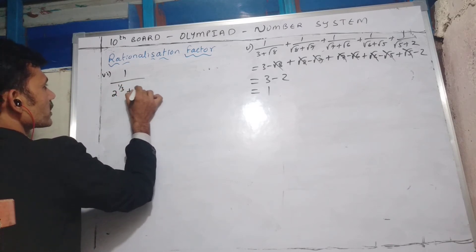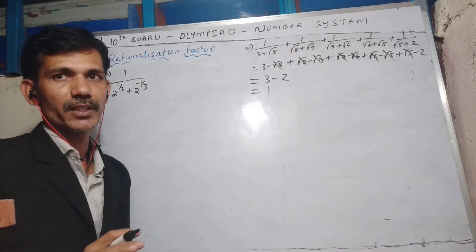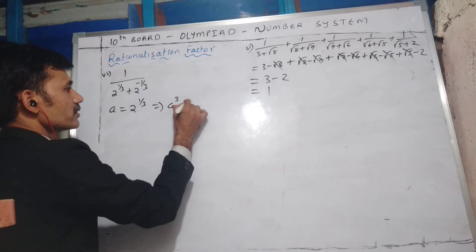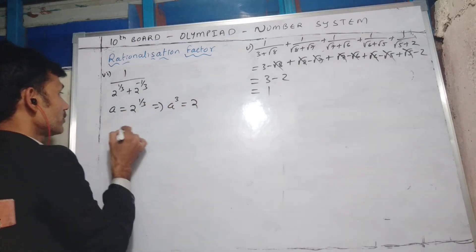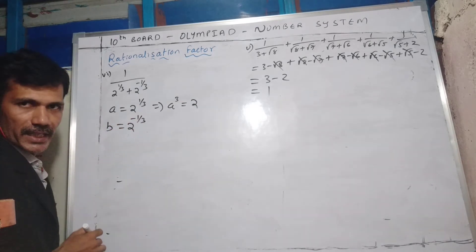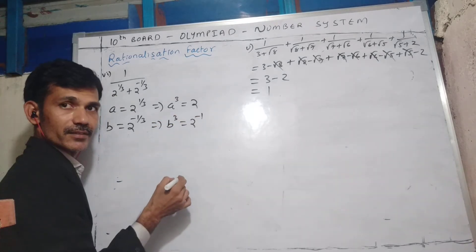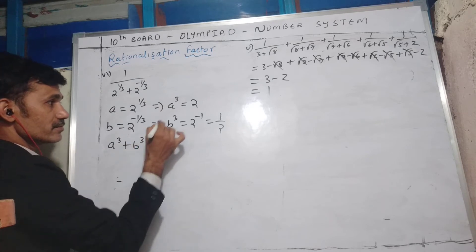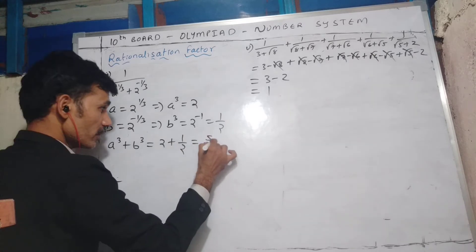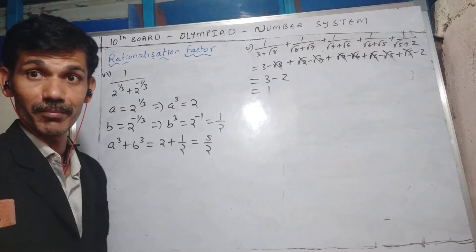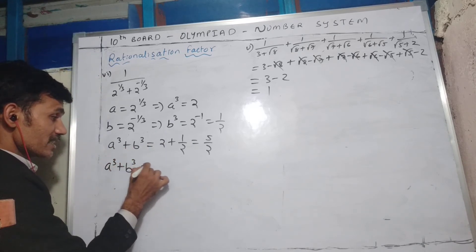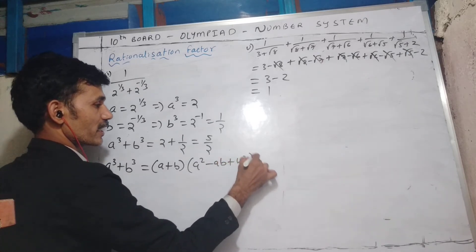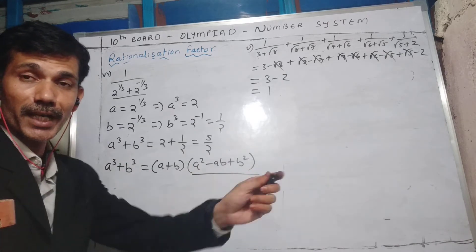Now a different binomial example involving cube roots: 2^(1/3) + 2^(-1/3). Let a = 2^(1/3), so a³ = 2. Let b = 2^(-1/3), so b³ = 2^(-1) = 1/2. Therefore a³ + b³ = 2 + 1/2 = 5/2. Since a³ + b³ factors as (a + b)(a² − ab + b²), and (a + b) is our expression, the rationalizing factor of (a + b) is (a² − ab + b²).